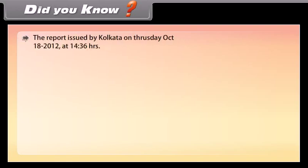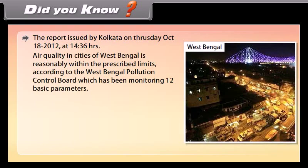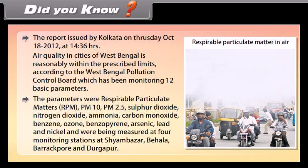Did you know: a report issued from Kolkata on Thursday, October 18, 2012, states that air quality in cities of West Bengal is reasonably within prescribed limits according to the West Bengal Pollution Control Board, which has been monitoring 12 basic parameters. These parameters include respirable particulate matters RPM, PM10, PM2.5, sulfur dioxide, nitrogen dioxide, ammonia, carbon monoxide, benzene, ozone, benzopyrene, arsenic, lead, and nickel — measured at four monitoring stations at Shyam Bazar, Behala, Barrackpur, and Durgapur.